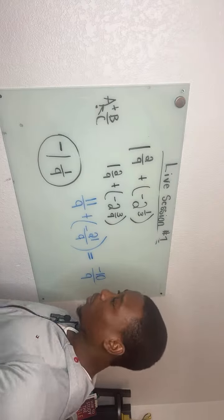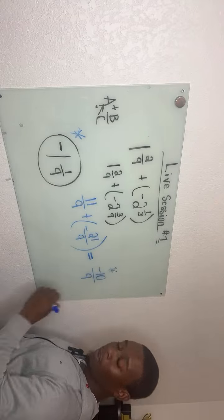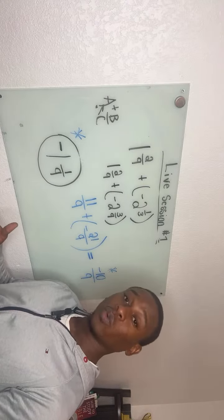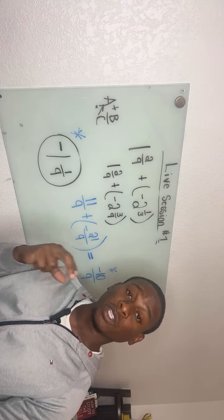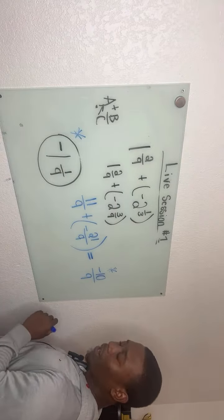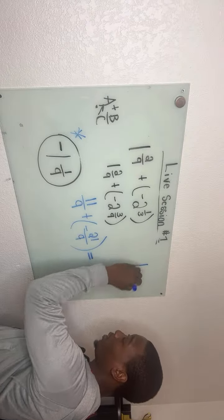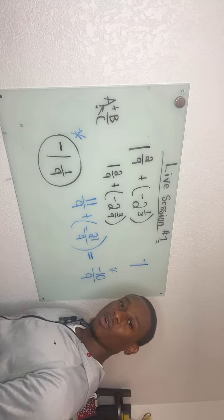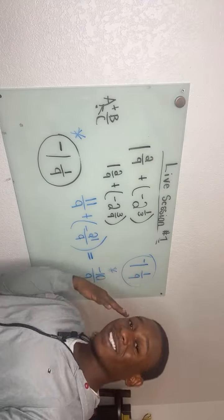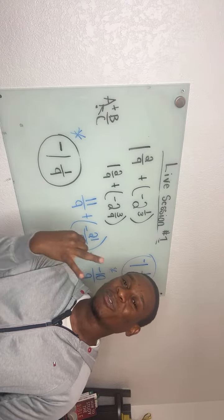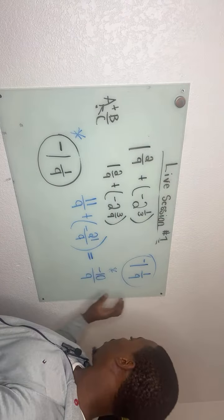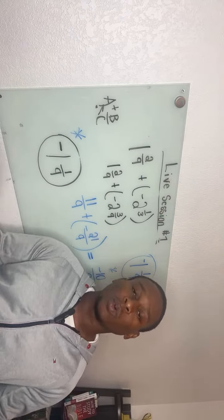Now I'll show you how this improper fraction equals the same answer we got before. We have an improper fraction and we want to turn it into a mixed fraction. Nine goes into 10 at least one time, it's negative, and what is left over is 1 over 9. So we get negative one and one ninth — the same exact answer, done two different ways. That's what I mean when I say we're working with mixed fractions and improper fractions.